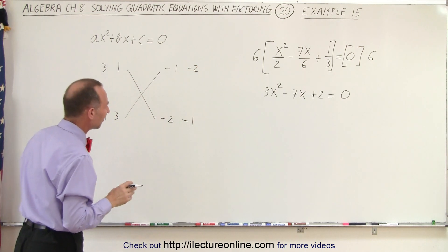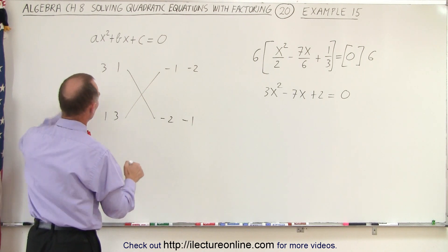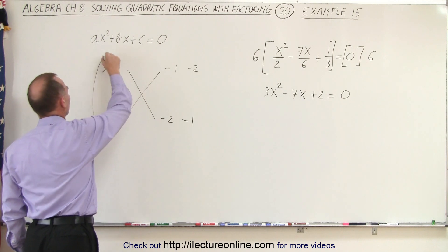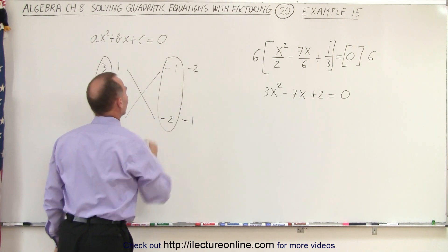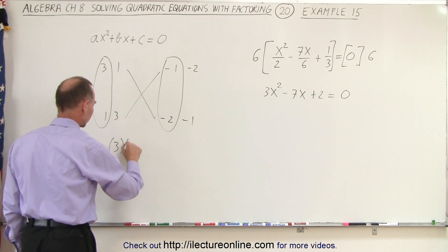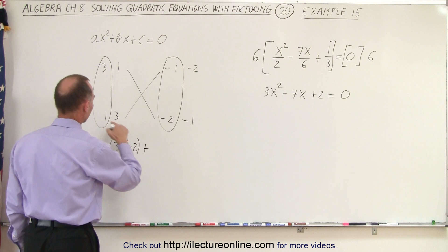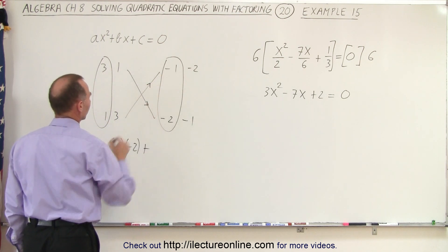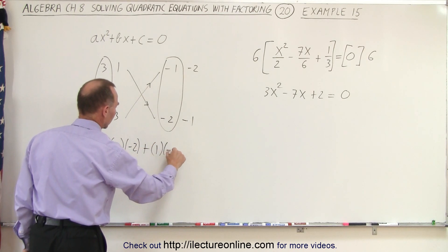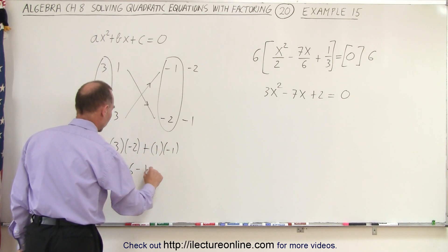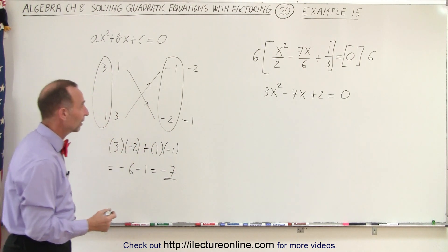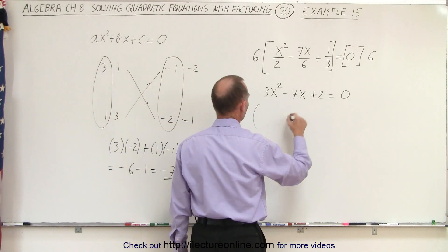Notice that the middle term is a 7, so we want a big middle term. So it looks like 3 times negative 2 gives us close. So I'm going to use these two combinations to see if we get the right number. So 3 times negative 2, and we add to that 1 times negative 1. Notice that the arrow goes this way. So 1 times negative 1, which is equal to negative 6 minus 1, which is negative 7. And that is indeed the middle term we're looking for.